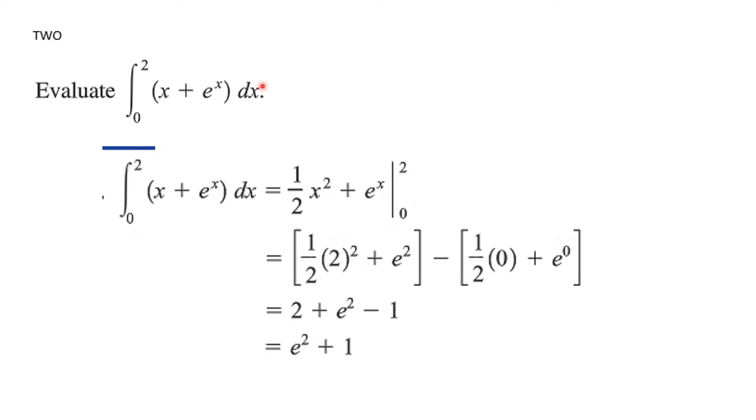Number two. You were to evaluate this definite integral. Your answer is going to be a number, and I expect it to be an exact number. So what we're going to do is integrate term by term. We add 1 to the exponent and divide by the new exponent. We get 1 half x squared, and the antiderivative of e to the x is e to the x. Then I evaluate these at 2 and 0. I stick 2 in and subtract, sticking 0 in. I know e to the 0 is 1, and e squared is just a number. If you do all the calculation, the exact answer is e squared, that is a number, plus 1.